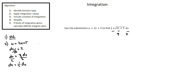Where we're going to find x is in our substitution term u equals 2x plus 5. That function has u as the subject — we want to manipulate so that x is the subject. I'll subtract 5 from both sides: u minus 5 equals 2x. I'll divide both sides by 2, and now I have x equals u minus 5 over 2.